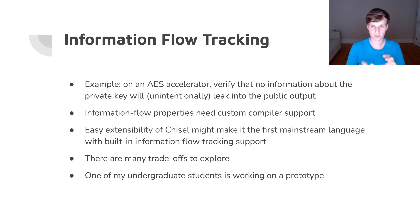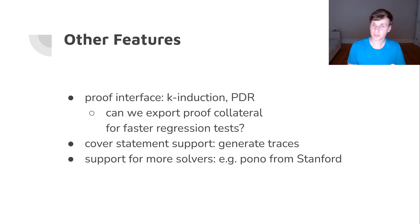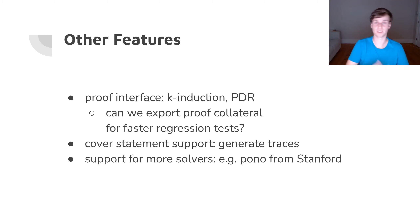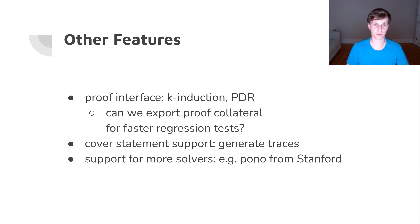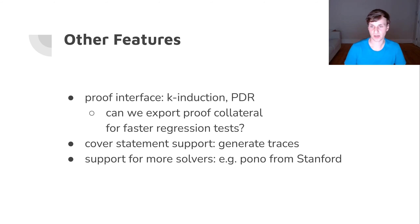I had an undergrad student working on a small prototype for information flow tracking, but we don't yet have enough good examples of what people actually want from this support. Other missing features include a proof interface — instead of checking for n cycles, being able to say there will never be a failure, no matter how many cycles — using model checkers that can do proofs with a good user interface. We also lack support for the Chisel cover statement, and for some solvers like the Pono model checker.